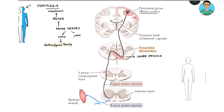To understand hemiplegia, there will be a lesion in the motor nerve. The lesion can be in the lower motor neuron or in the upper motor neuron. Focusing on the UMN, the lesion can be above the level of decussation, at the level of decussation, or below the level of decussation.